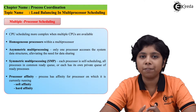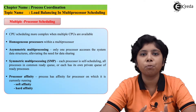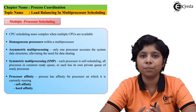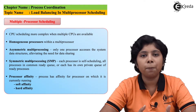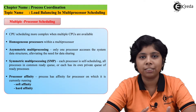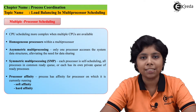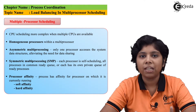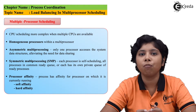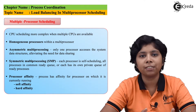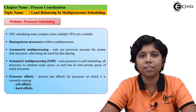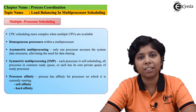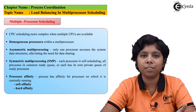There are two types of load balancing. One is push migration and another is pull migration. In push migration, there is a specific task which periodically checks the load on each processor. If it finds an imbalance, it evenly distributes the workload by pushing processes from the busy processor to an idle or less busy processor.